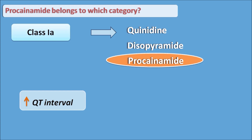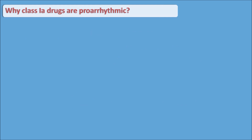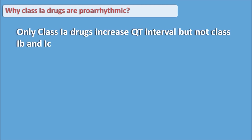Procainamide increases the QT interval in the ECG, thereby it can precipitate torsades de pointes — hence it is called a proarrhythmic agent. Among class 1 drugs, only class 1A drugs increase the QT interval and are proarrhythmic. This action is not observed with class 1B and 1C drugs.